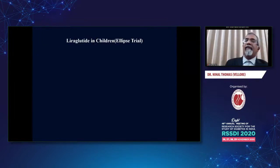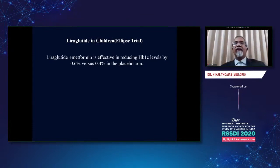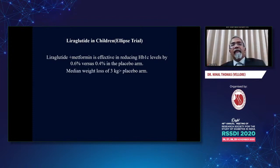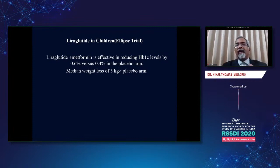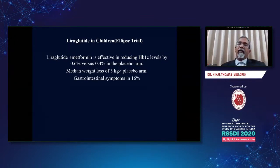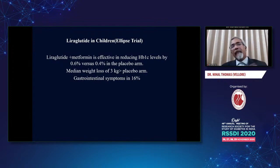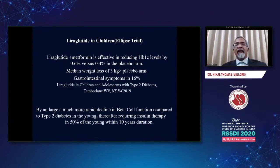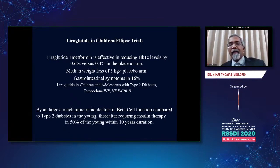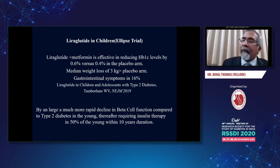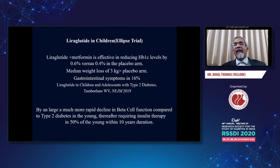Sulfonylureas can also help. There is a good study comparing glimepiride versus metformin — there is no doubt that sulfonylureas are powerful medications, and you can see there was an A1C improvement with glimepiride compared to metformin in this head-to-head comparison. Finally, liraglutide in the ELLIPSE study published in the New England Journal of Medicine: liraglutide added on to metformin can have a profound effect not just in adults but in children as well. Having said that, gastrointestinal symptoms can be fairly intense — it's recommended you can go up to about 1.8 milligrams safely in these children, but one has to be cautious to prevent GI adverse effects. A more rapid decline in beta cell function compared to type 2 diabetes in adults is seen, with about 50% requiring insulin within about 10 years.